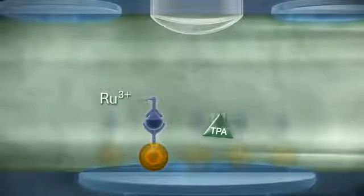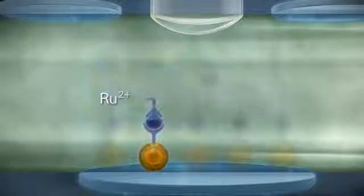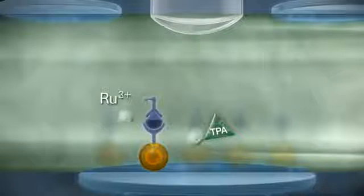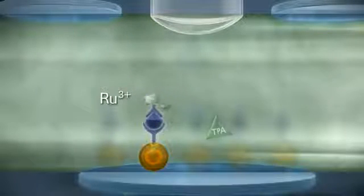Voltage triggers the ECL reaction. Ruthenium and TPA are excited in the process. The TPA radical then serves as a reductant, enabling ruthenium to return to its base state with the release of light.